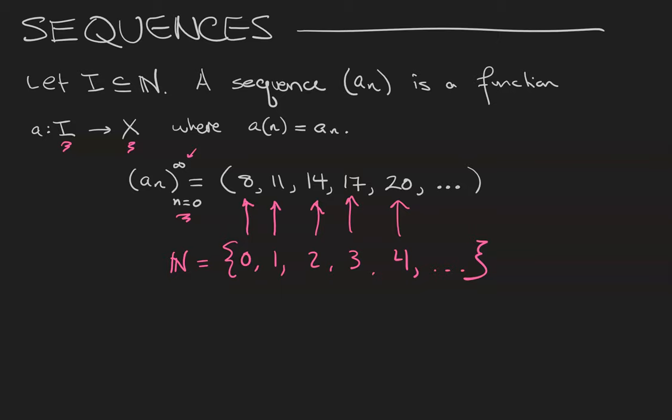In fact, you can write down the closed form expression for this sequence. Notice that each term increases by 3, so our sequence is going to have a 3n in it, and then since the first term is 8, it's going to be 3n plus 8. So this is called the closed form expression for the sequence.